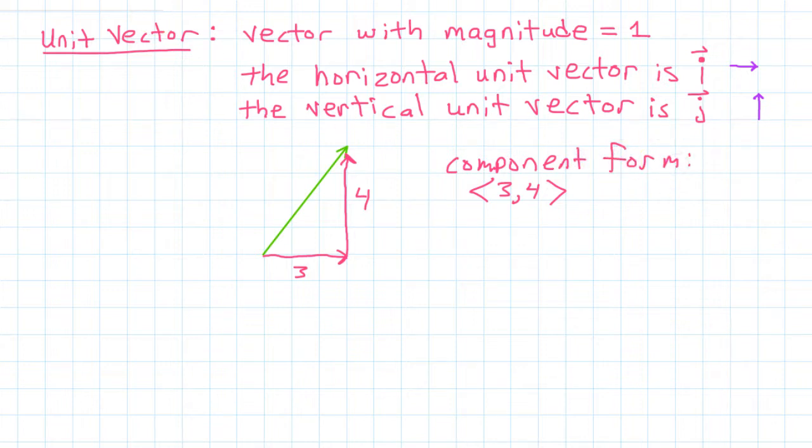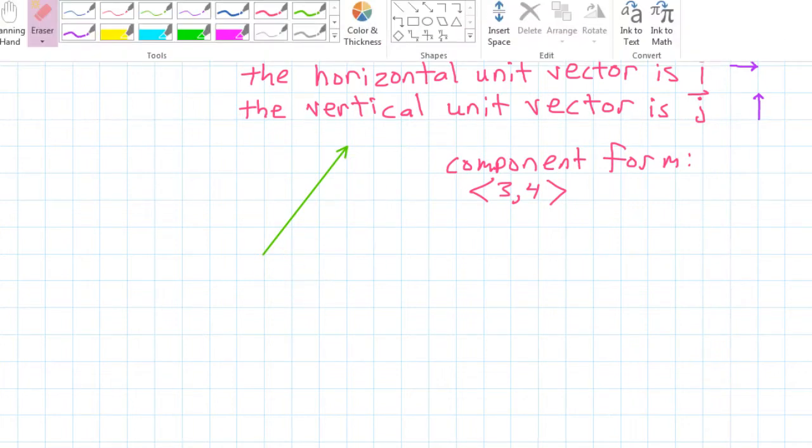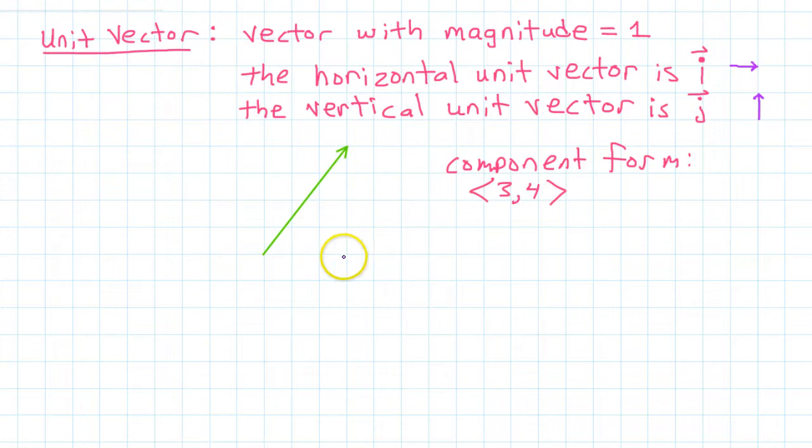But there's another way to look at this using unit vectors. Instead of looking at a single horizontal component, we could look at this horizontal component as being 3 unit vectors. 3 i's. Instead of looking at the vertical component as 1 vertical vector magnitude 4, we could look at this as 4 unit vectors.